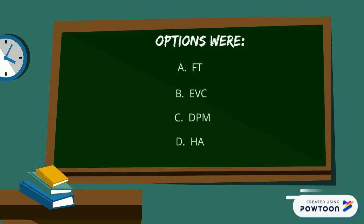Let's review your options again. Option A FD and option D HA are both high availability solutions which help in VM or host failure. Whereas option B EVC is more about migrating VMs across different CPU families. So option C DPM is the only option which helps in consolidating workloads during times of low periods.